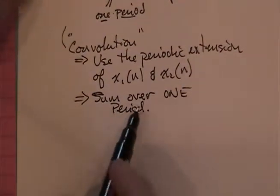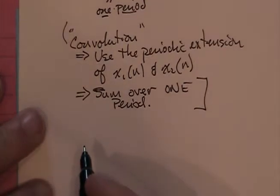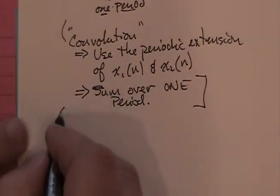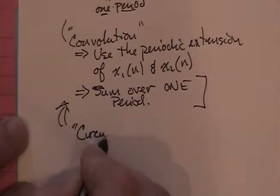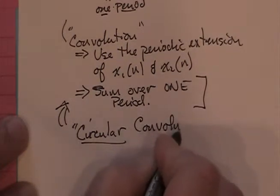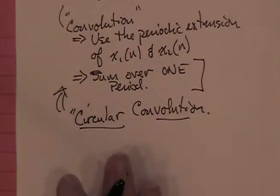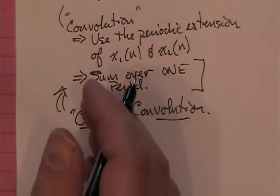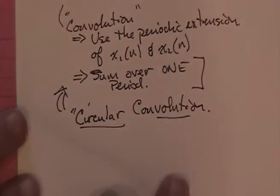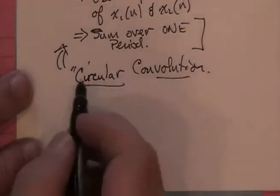Once I'm dealing with samples in the frequency domain, I'm going to sum those values over a single period of the waveform. All of that stuff together — when we do it often enough, we're going to call it circular convolution. The punchline there is that the waveforms you're convolving are actually the periodic extension.